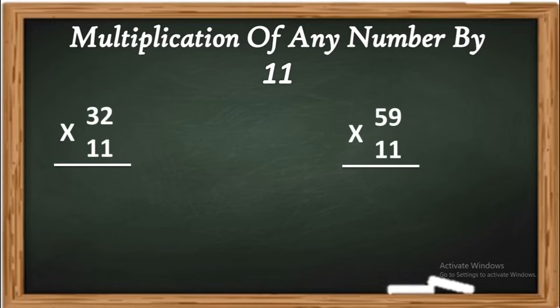First, 32 into 11. First, write 2 as it is 2, and write 3 as it is 3. What about 3 plus 2? 3 plus 2 is 5, and the final answer is 352.